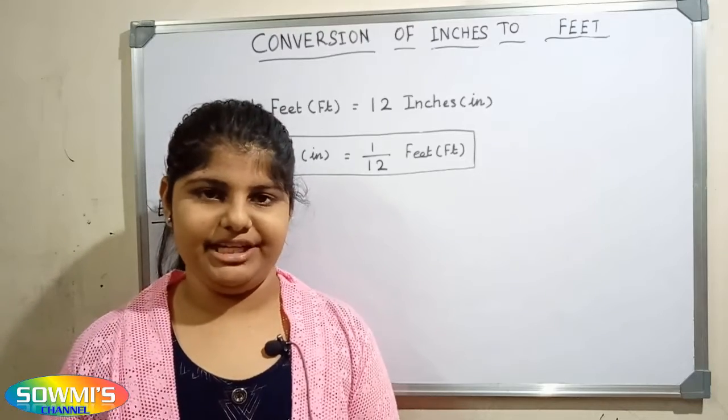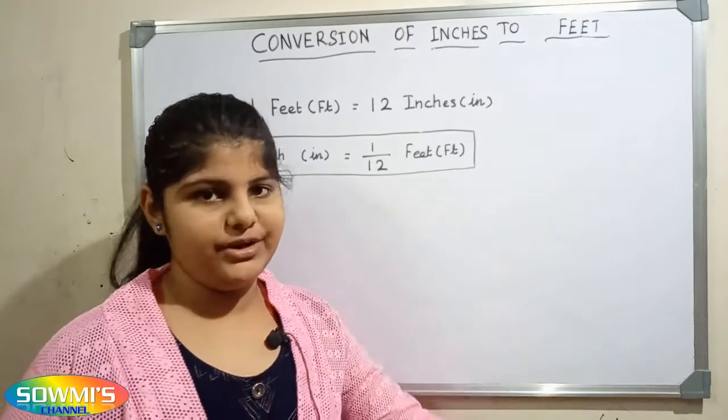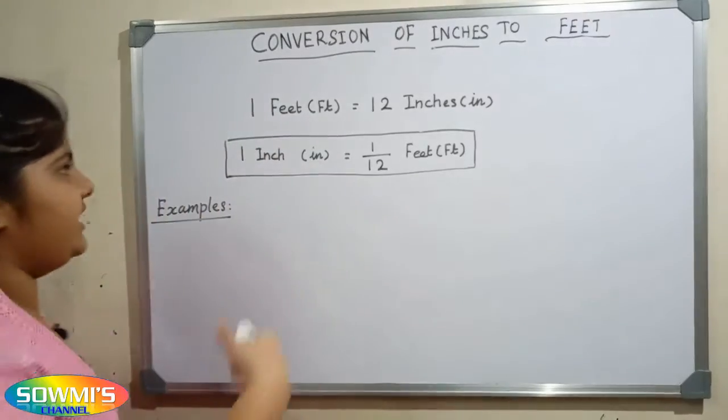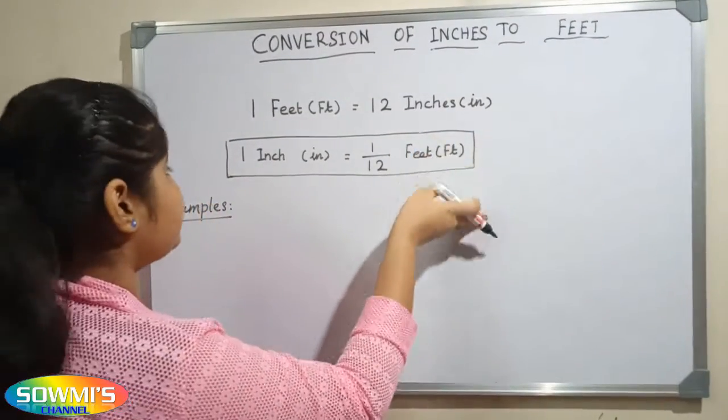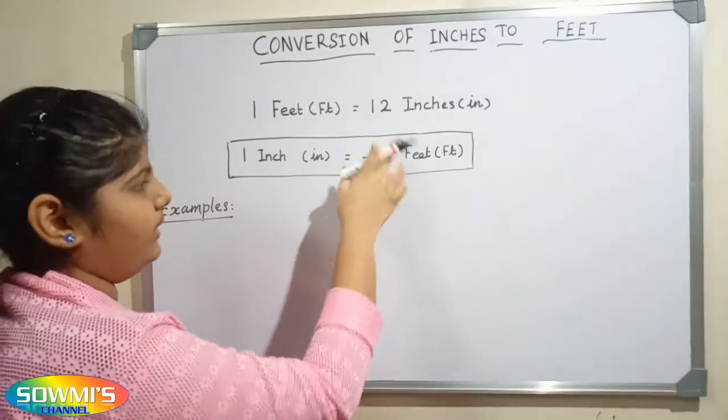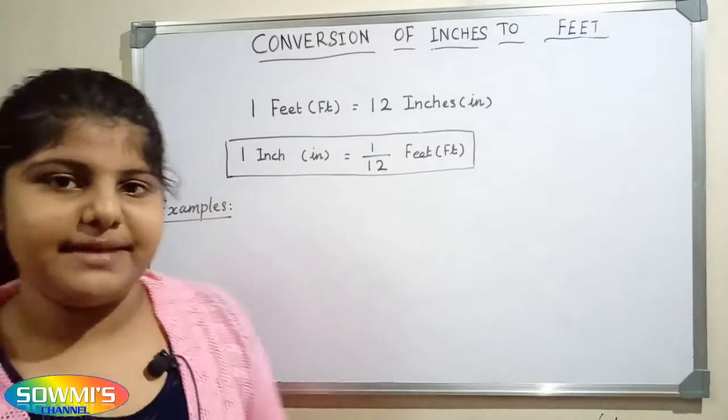Come on, let's go into the video. We already know that 1 feet is equal to 12 inches. So 1 inch is equal to 1 by 12 feet. Let us see some examples.